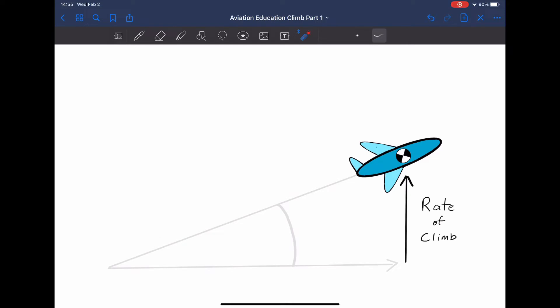The second kind of climb is the rate of climb. This one involves only the vertical speed of the climb itself. It doesn't take into account your horizontal distance covered. That's not to say that there is not any horizontal distance covered. It's just that the primary emphasis is on the vertical rate of the climb itself.